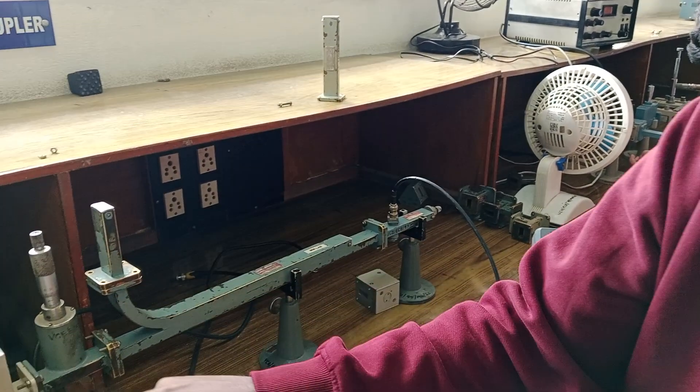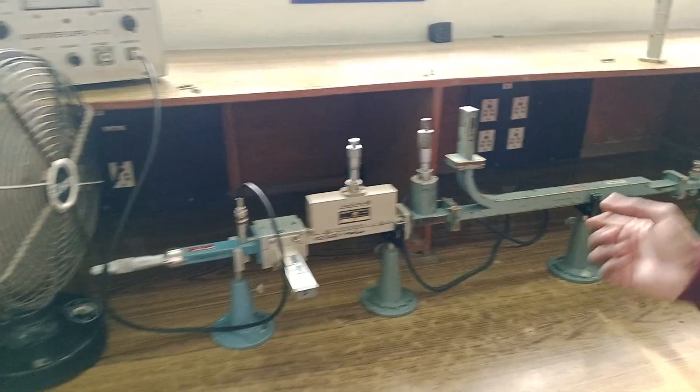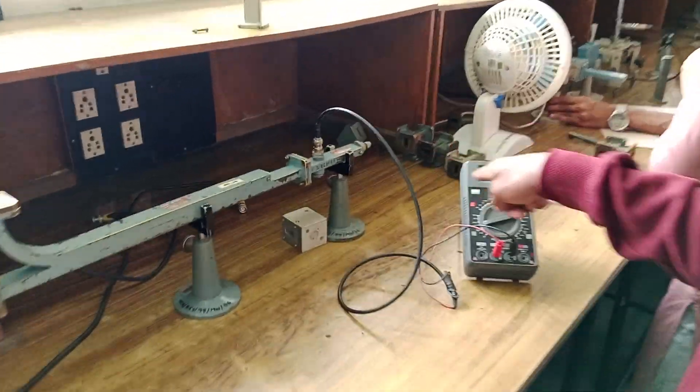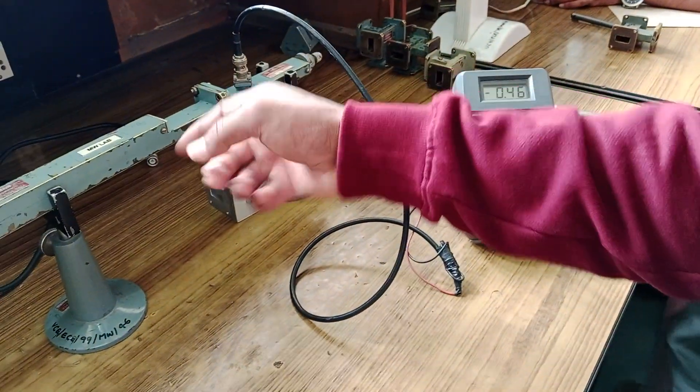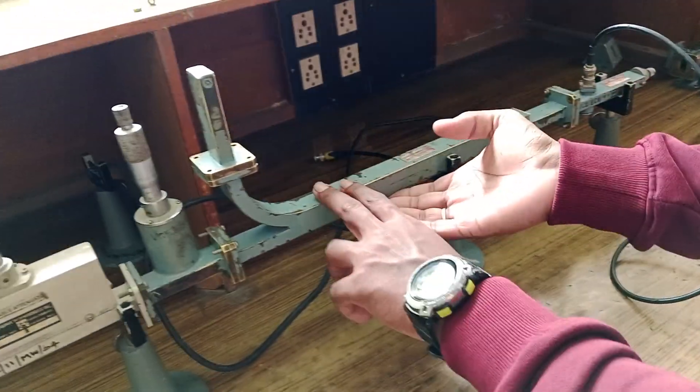I will note down the value. The input current was 1.16 as we saw earlier. You will note down the output current whatever you are getting here. And you will change the orientation of the direction coupler.